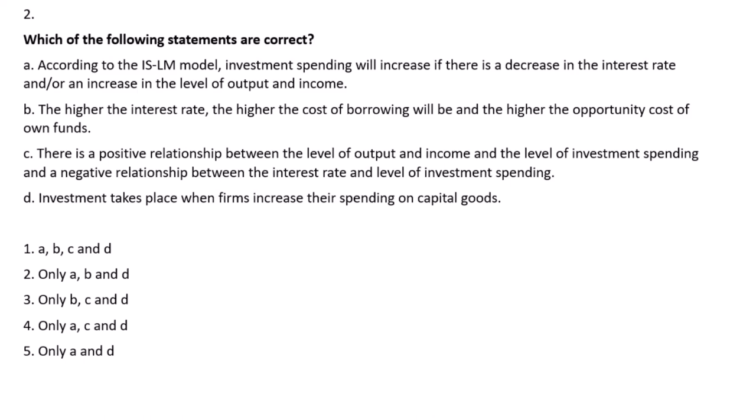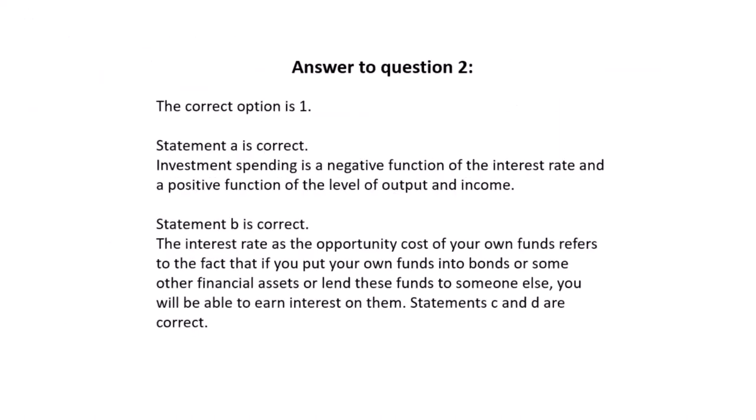What does opportunity cost mean? You choose not to invest because of the high cost — statement B is correct. Statement C: there is a positive relationship between the level of output and investment spending, and a negative relationship between interest rates and investment spending — true. Statement D: capital goods include water vehicles, buildings, and so forth — true. So A, B, and C are all correct.